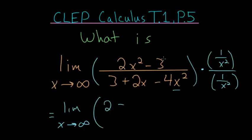And then we have minus 3 times this, which I'll write as 3 over x squared. And that would be our numerator.